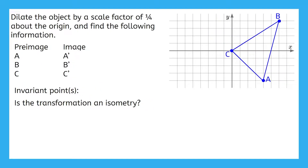Our final example says to dilate about the origin, which is (0, 0). It may seem strange that the center of dilation is where point C is on our object, but it actually makes this problem easier than the last. So use your instincts — even if something seems strange, it's likely you're doing it correctly. Complete this entire problem by yourself and pause the video now.